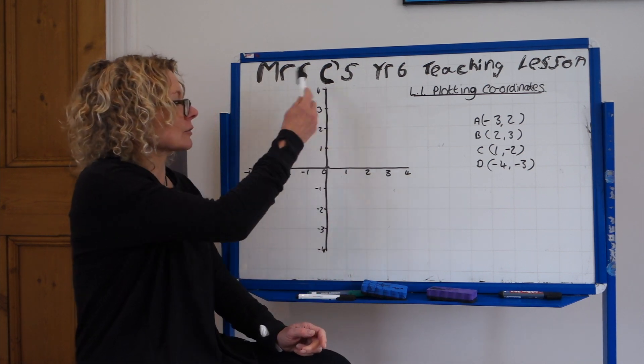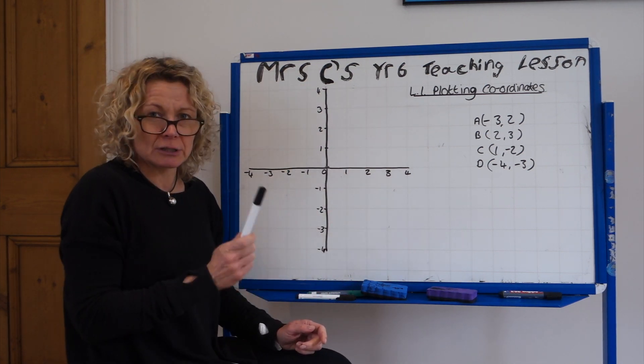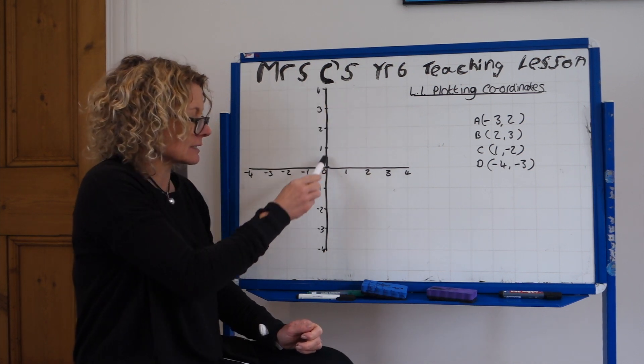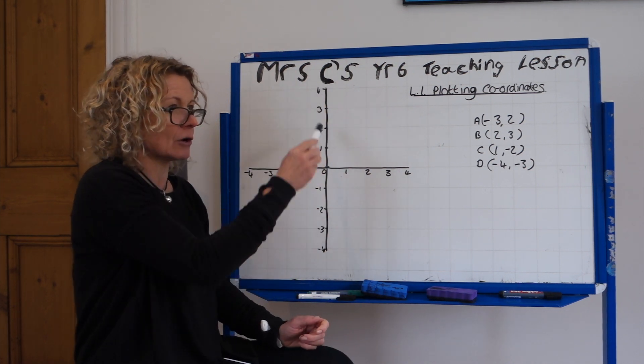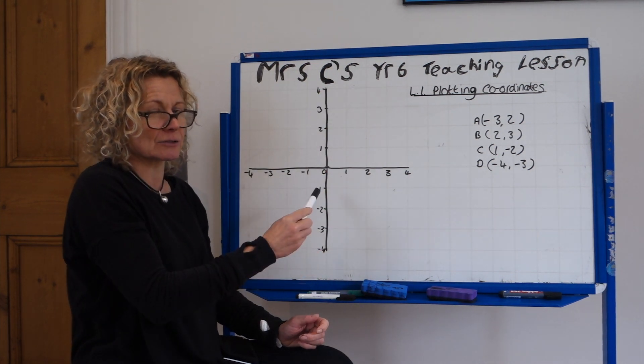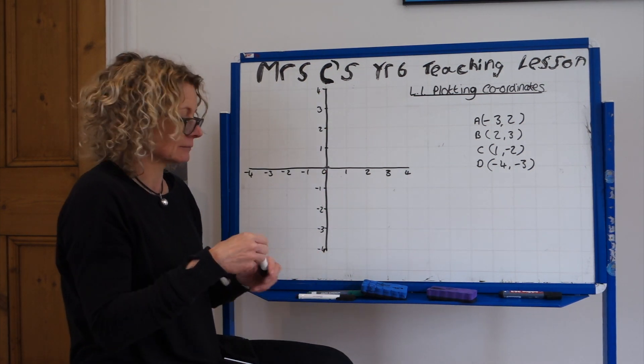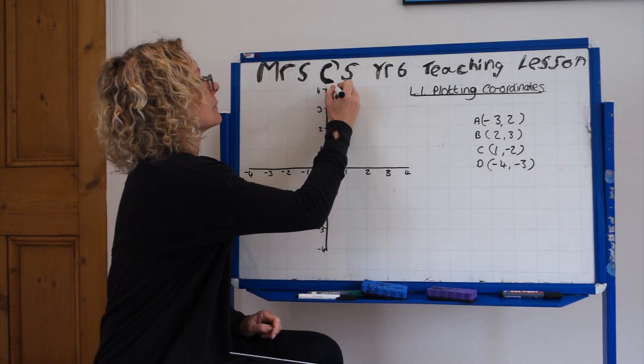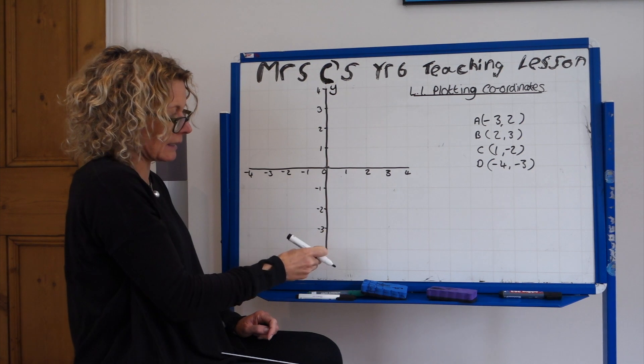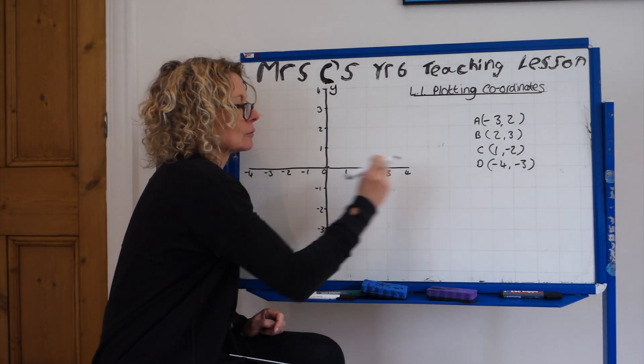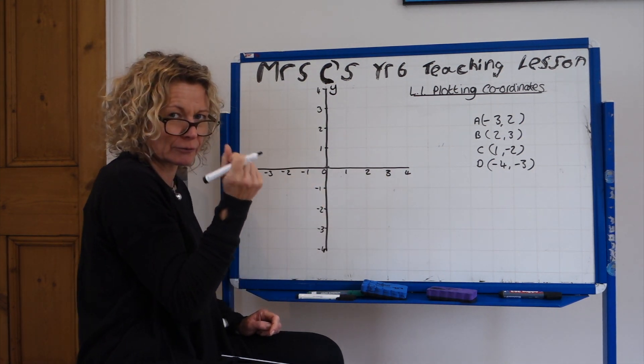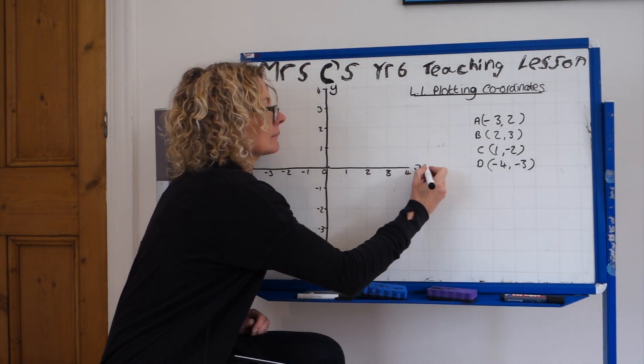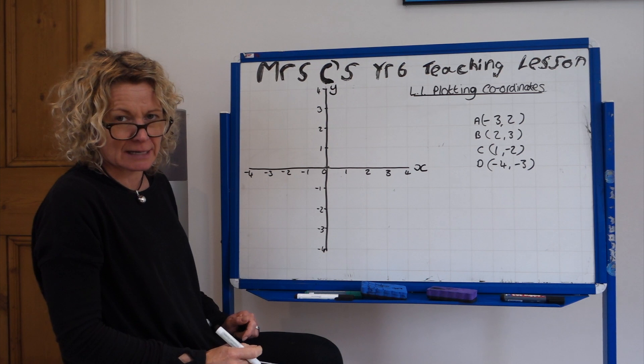So you have created your quadrant graph, we're now going to label it. Can you remember what this axis was called? It had a long hanging down tail to remind you. You need to label it. It is the y-axis. This horizontal one was the stubby one, the fat one that goes across. So it was the x-axis.